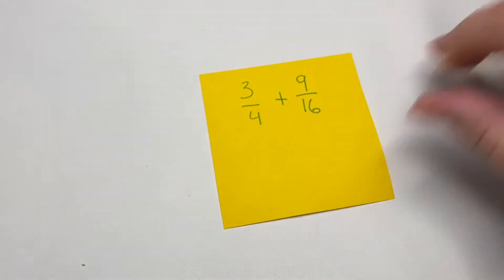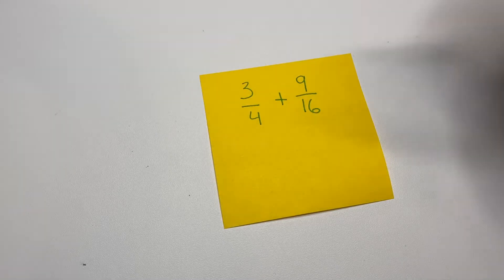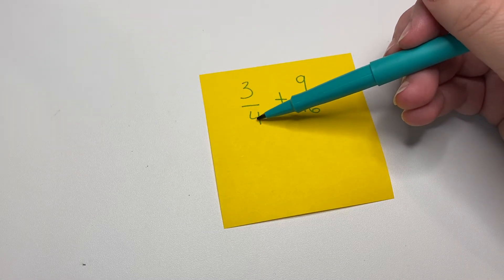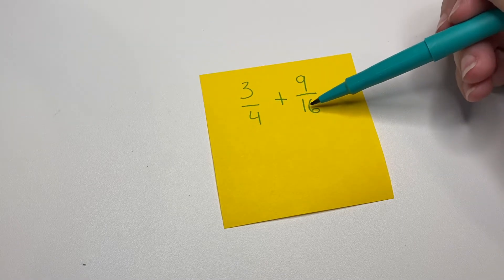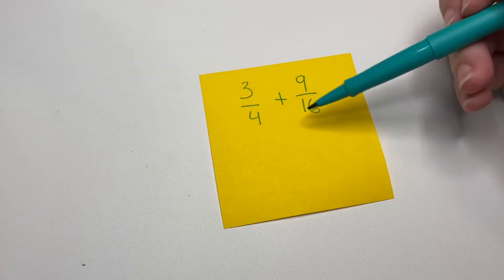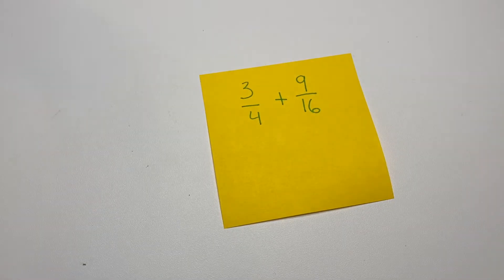So the first thing that you would do is check for factors in the denominators. So is 4 a factor of 16? Which it is. 4 goes into 16. So we actually are only going to need to adjust one of our fractions and we're going to multiply it by 1.